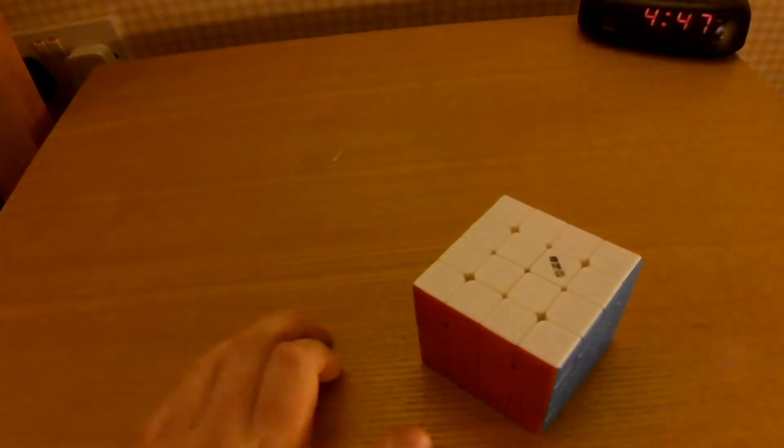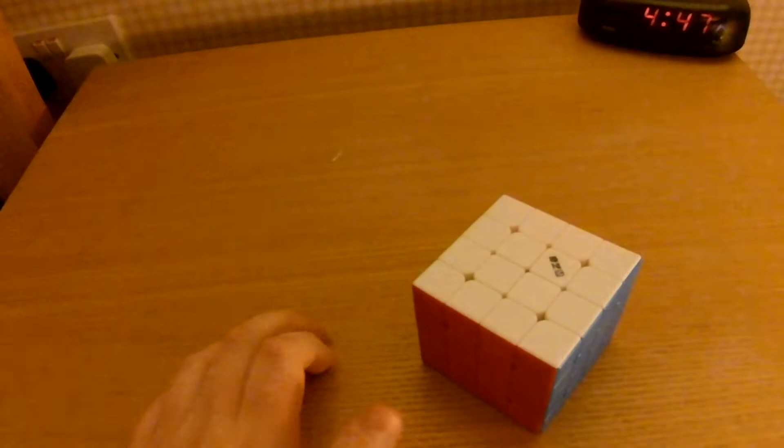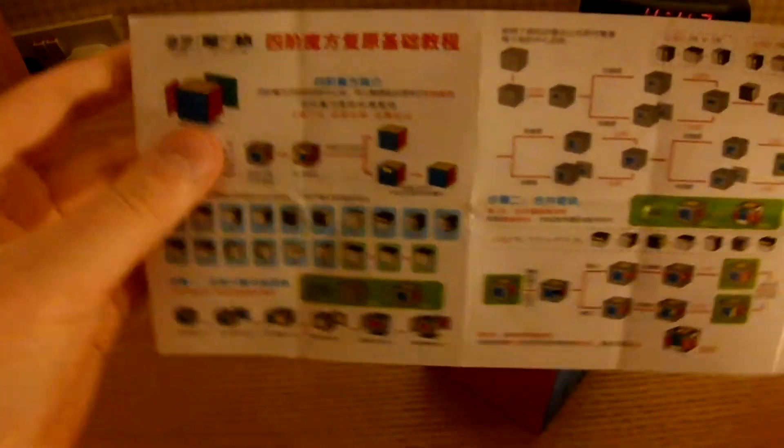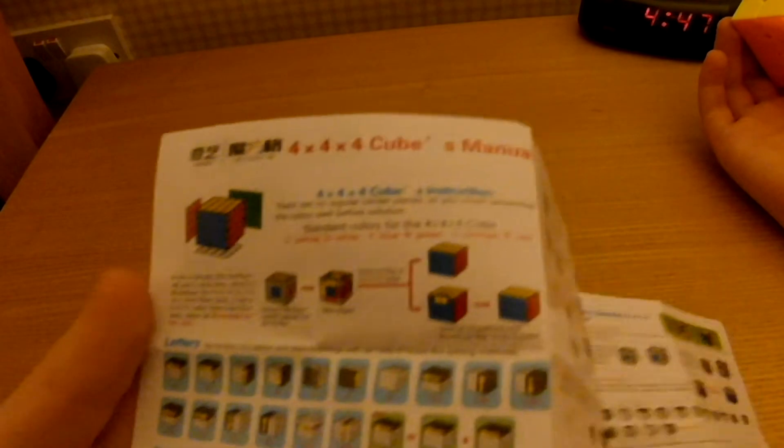The instructions, let's just have a look at the instructions. So, these are the instructions. It does all of these steps. You should be looking at the English side, not the Chinese side. So basically, it shows you all the basics, letters, so that's just notation.